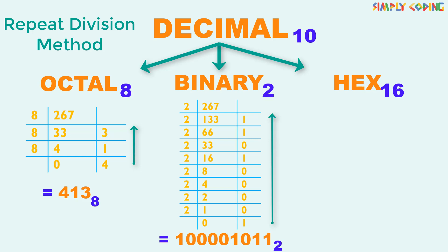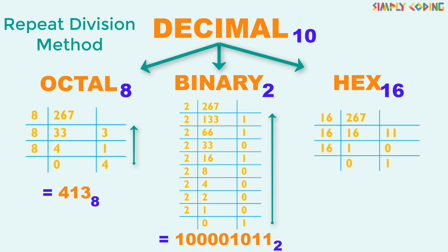Now the same decimal number 267, if we are converting to hexadecimal — since hexadecimal is base 16 — we use repeat division by 16. We divide the number by 16 and note down the quotient and remainder, and continue to divide the quotient by 16 until the quotient is less than 16. We first convert the sequence of remainders to hex numbers — like 11 is hex number B. This sequence of remainders from bottom up is the hexadecimal equivalent of 267, which is 10B.